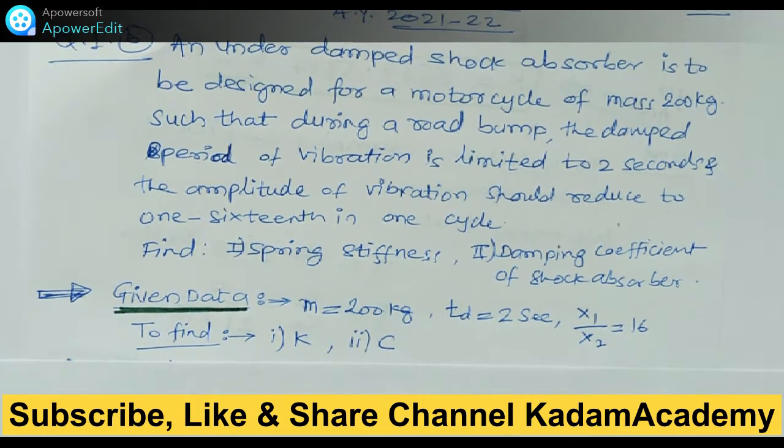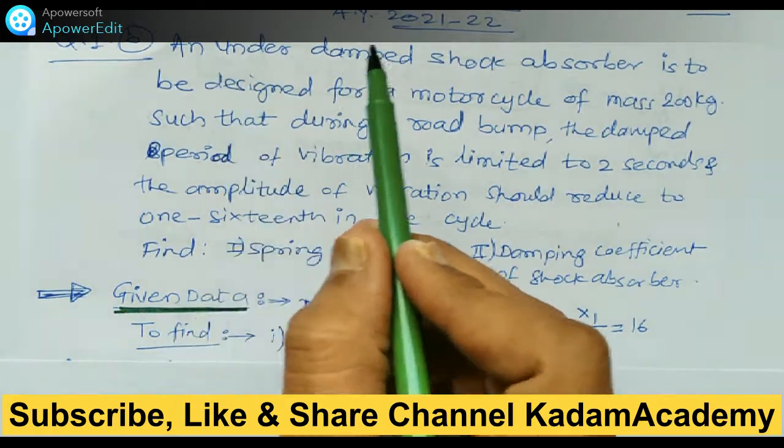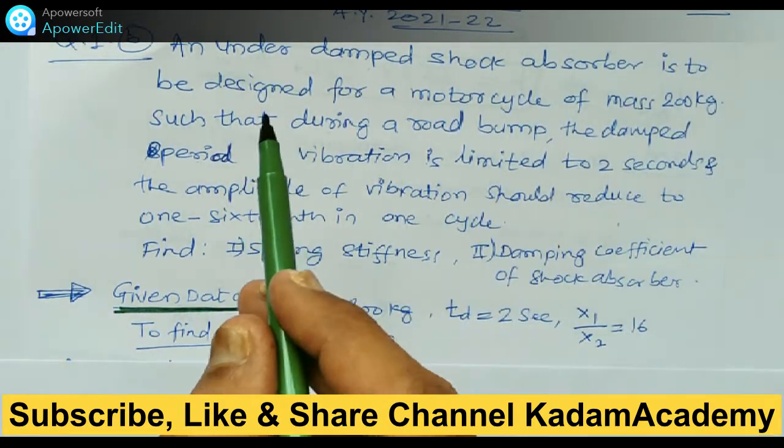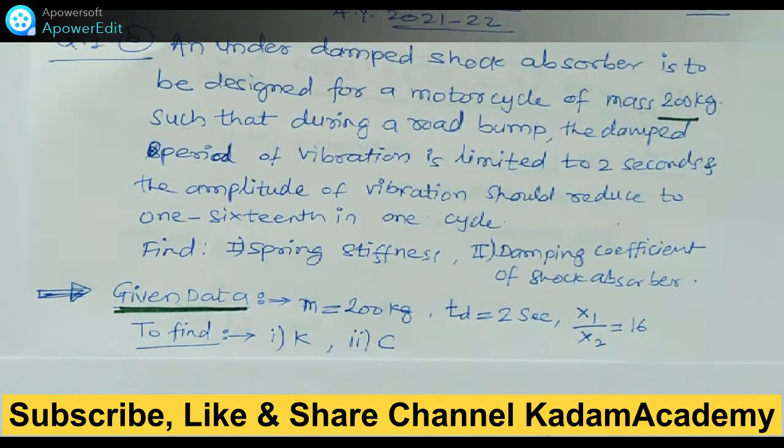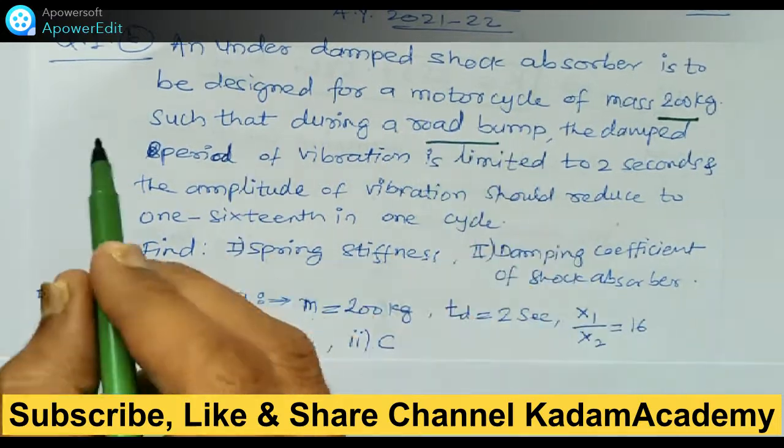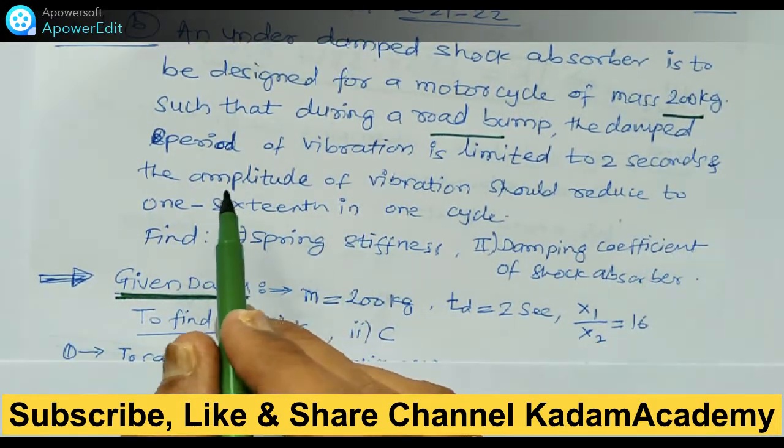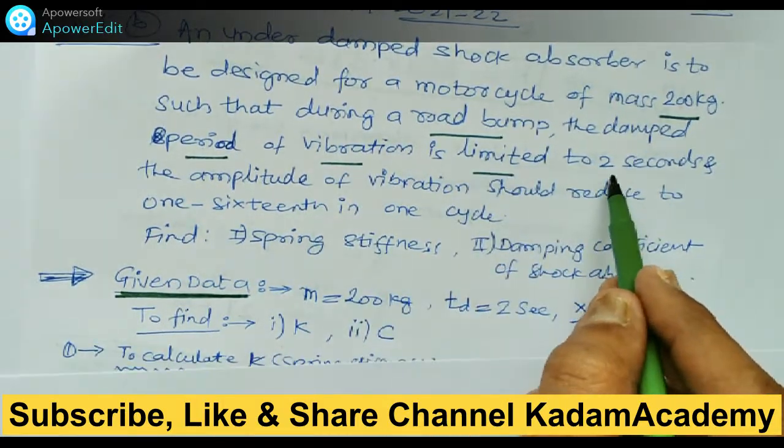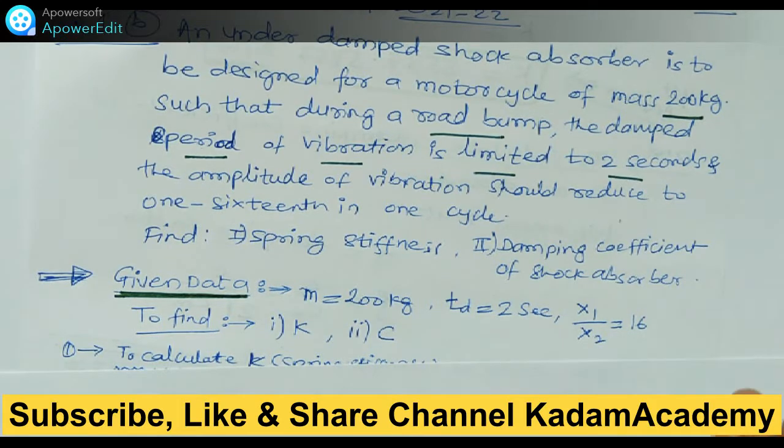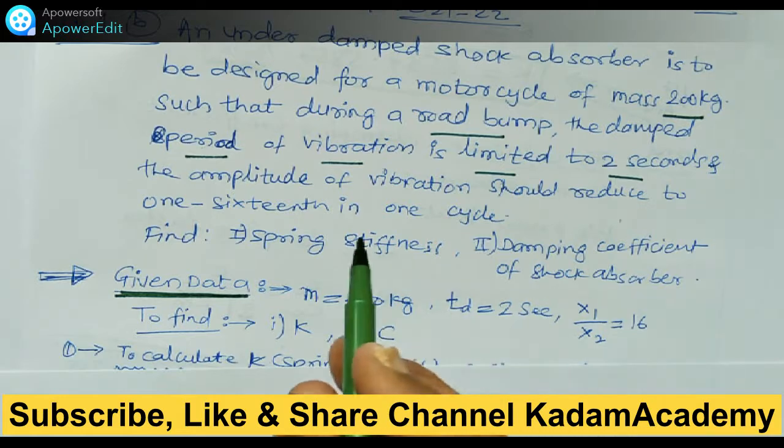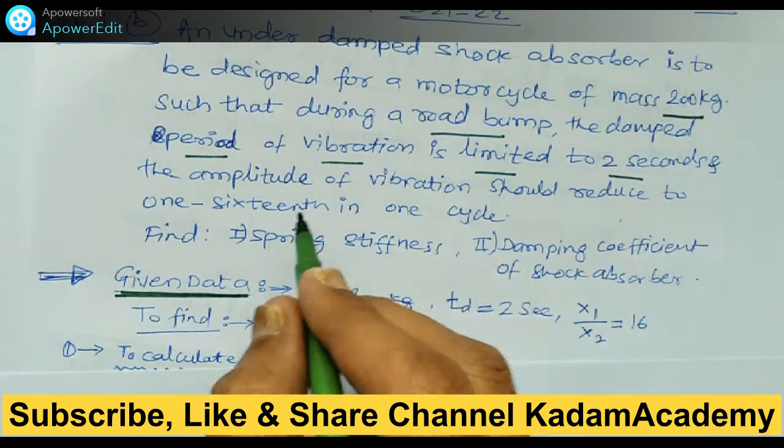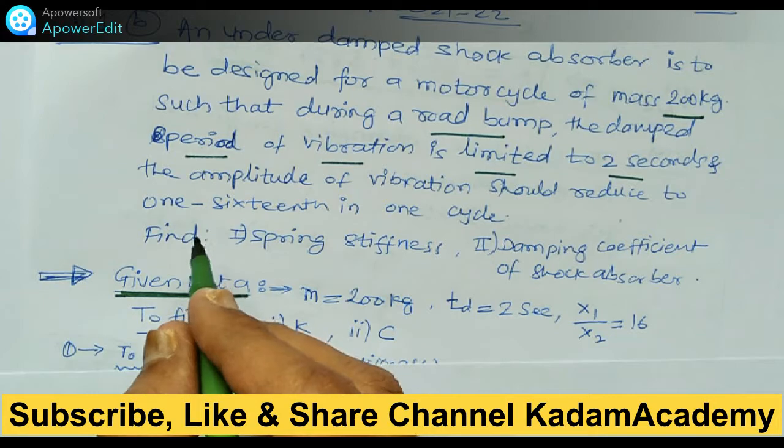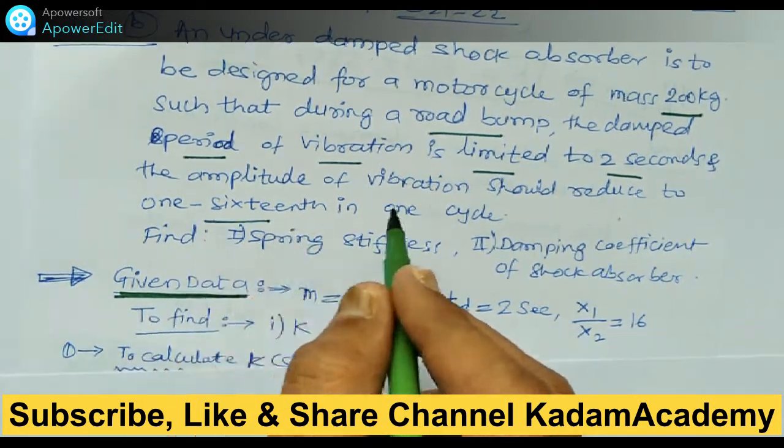I'll read the numerical. An underdamped shock absorber is to be designed for a motorcycle of mass 200 kg, such that during road bumps, the damped period of vibration is limited to two seconds only. The amplitude of vibration should reduce to one-sixteenth in one cycle due to this absorber.